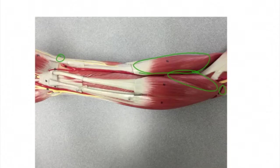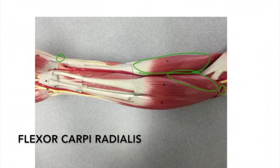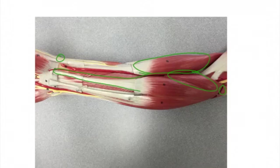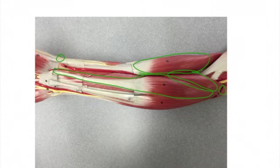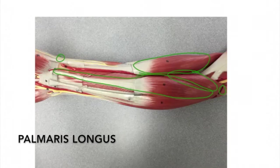Next to the brachioradialis is the flexor carpi radialis. This muscle originates from the medial epicondyle of the humerus and inserts to the second and third metacarpals. The action is to flex the wrist, assist in pronating, and abduct the hand.